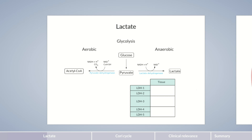LDH1 and LDH2 are found mainly in cardiac muscle cells, erythrocytes, and kidney cells. LDH3 is found in the cells of the lung, the lymphatic system, and platelets, whereas LDH4 and LDH5 are present primarily in liver and skeletal muscle cells.